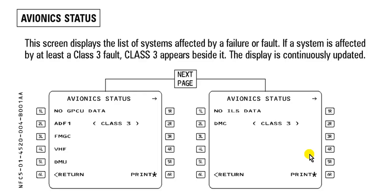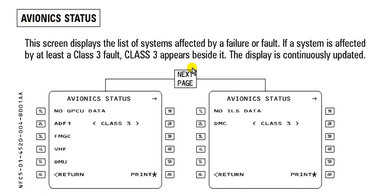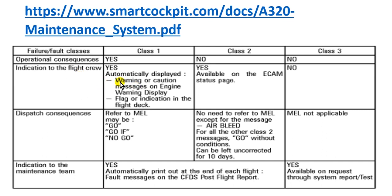Let me show you the avionics status screen. Look here - Class 3. This screen displays the list of systems affected by the failure or fault and the systems affected by at least one Class 3 fault. Here is the unit, and here is Class 3. So the correct answer is the avionics status menu.